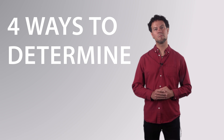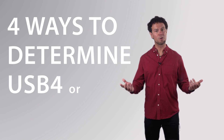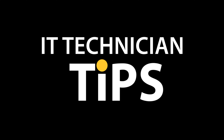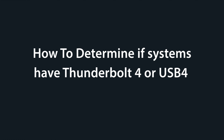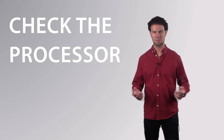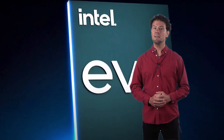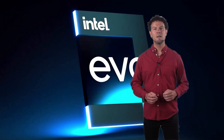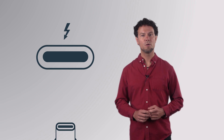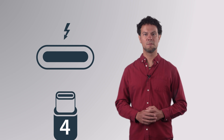Now, here are four ways to determine if your system has USB 4 or Thunderbolt 4 capabilities. One: check the processor. If a device has an Intel Evo processor, then it's simple — they are required to have at least one Thunderbolt 4 port, which works with USB 4 devices.